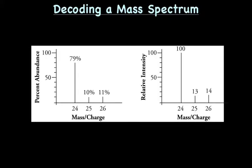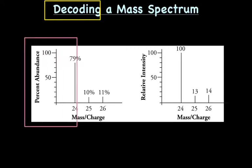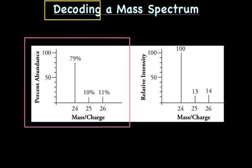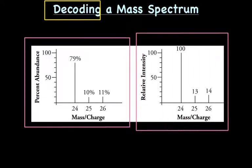Now the part we really care about is how do we decode a mass spectrum. Here are two different bar graphs. The mass spectrum is usually plotted out either as percent abundance, which is a little bit easier, or by relative intensity. We're going to talk about how to read both types of graphs and how we can use them to determine average atomic mass of either an atom or a compound.